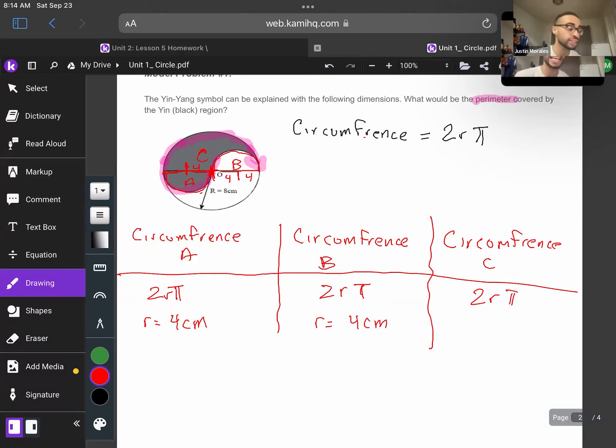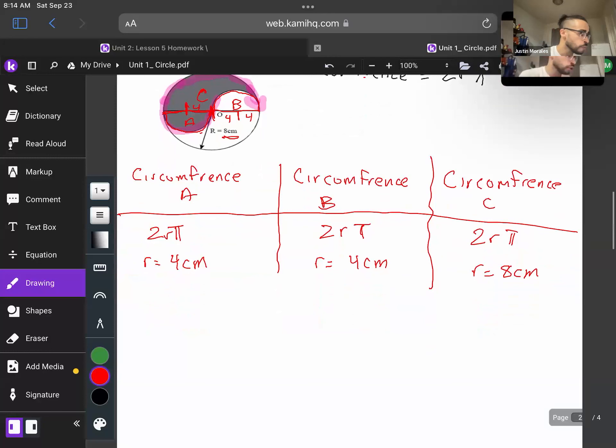So we're going to label this as going to have a radius of 4 centimeters. This is going to have a radius of 4 centimeters. And once again, this problem already tells us that the radius of the entire circle, which is circumference of semicircle C, is going to be 8 centimeters. And once again, if you notice, I keep on writing centimeters. I'm using units, bare minimum effort.